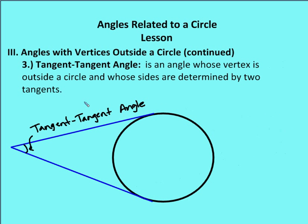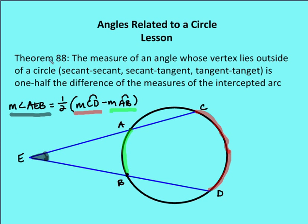The third possibility is a tangent-tangent angle. Going back to the two-tangent theorem — the ice cream cone theorem — the length of AB equals the length of AC. The tangent-tangent angle BAC is formed by two tangents. Now, theorem 88 says the measure of an angle whose vertex lies outside of a circle — whether secant-secant, secant-tangent, or tangent-tangent — is one-half of the difference of the measures of the intercepted arcs. So the measure of angle AEB equals one-half of arc CD minus arc AB.